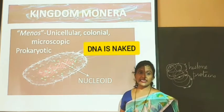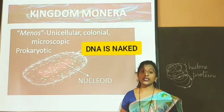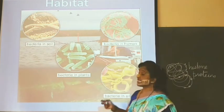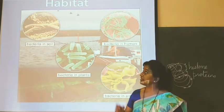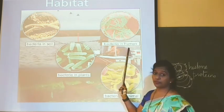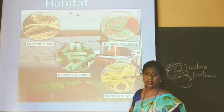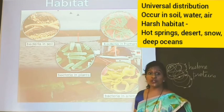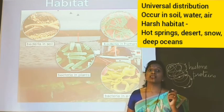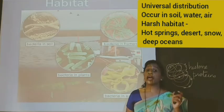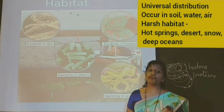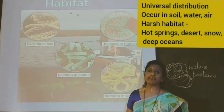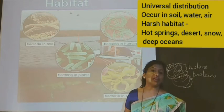The DNA is the naked one without a nuclear membrane. Since these organisms are the primitive ones, they will be present in soil, or in human beings. They can also be present in plants, animals, and also in harsh, unfavorable conditions — for example, in icebergs, in hot springs, or in hot deserts. These organisms are able to thrive in any type of environmental condition.